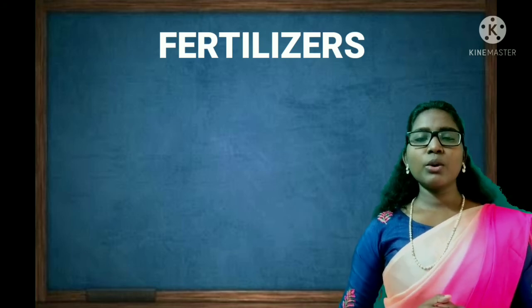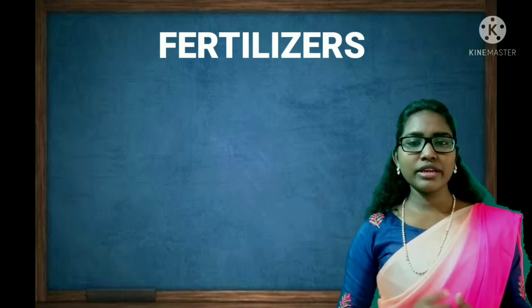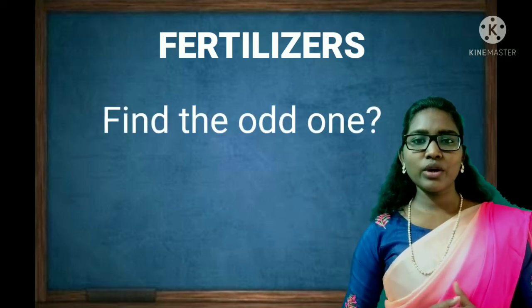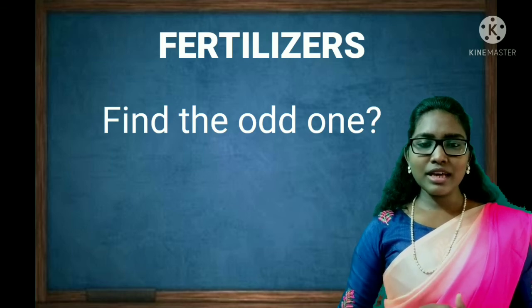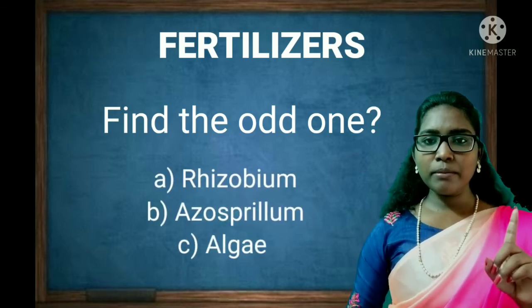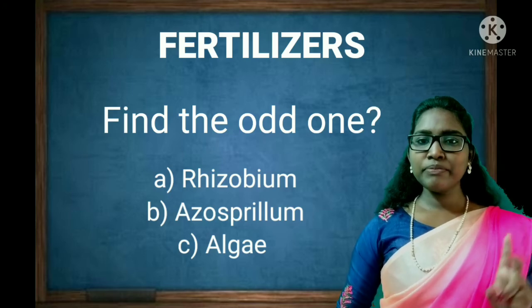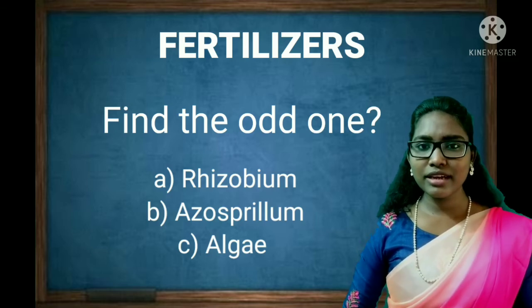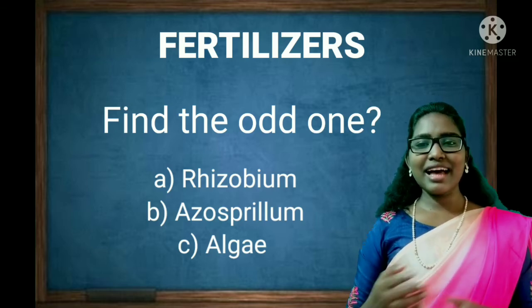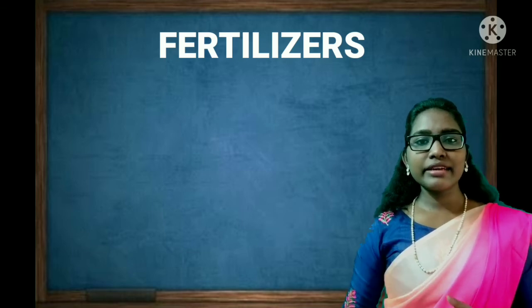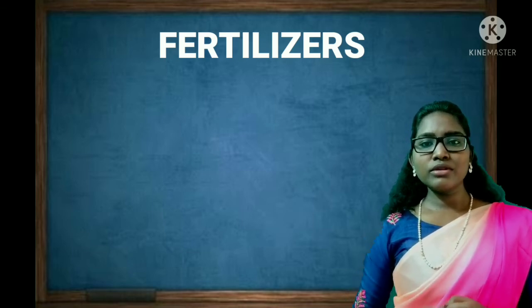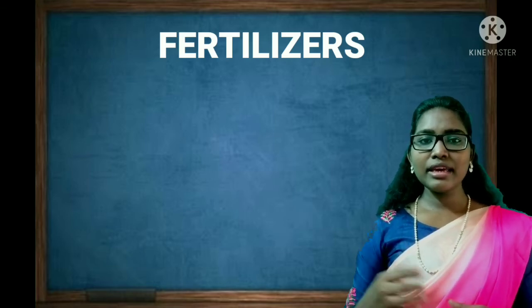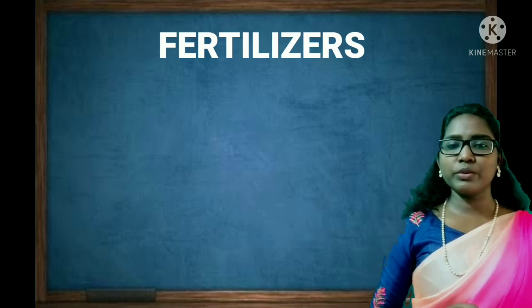Shall we continue? Girls, here is your next question: find the odd one out. Options: A — Rhizobium, B — Azospirillum, C — Algae. The correct answer is algae. Why is algae the correct answer? Because Rhizobium and Azospirillum are microorganisms, while algae is a green leaf manure.